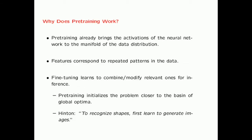Why does pre-training work? Even though you are doing supervised learning, pre-training brings the activations of the neural network to the manifold of the data distribution, so the features already correspond to repeated patterns in the data. The final fine-tuning phase simply learns to combine and modify those relevant features for inference. Pre-training initializes the problem closer to the basin of the global optimum; starting with random weights places you far from the manifold of the data distribution. As Hinton summarized: if you want to recognize shapes, you must first learn to generate images — learning to generate shapes is the first step in learning to recognize them.